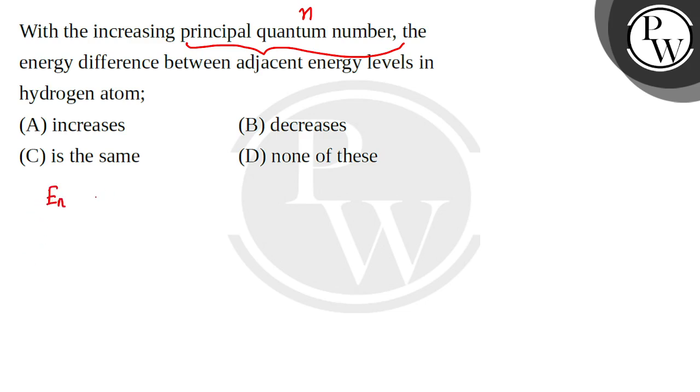We know that E_n is minus 2.18 into 10 to the power minus 18 joule per atom into z square upon n square. This is the value. z is the atomic number, n is the principal quantum number.